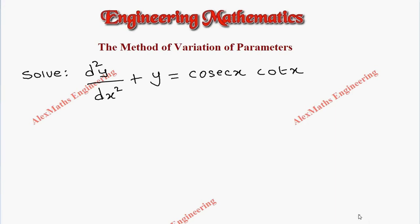Hi students, this is Alex. In this video we are going to solve a problem based on the method of variation of parameters. The given question is d²y/dx² + y = cosecant x · cot x. This can be rewritten as (d²/dx² + 1)y = cosecant x · cot x.